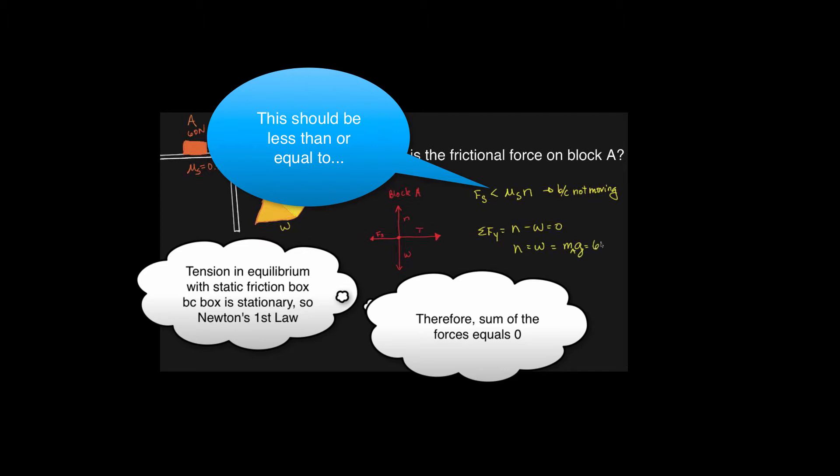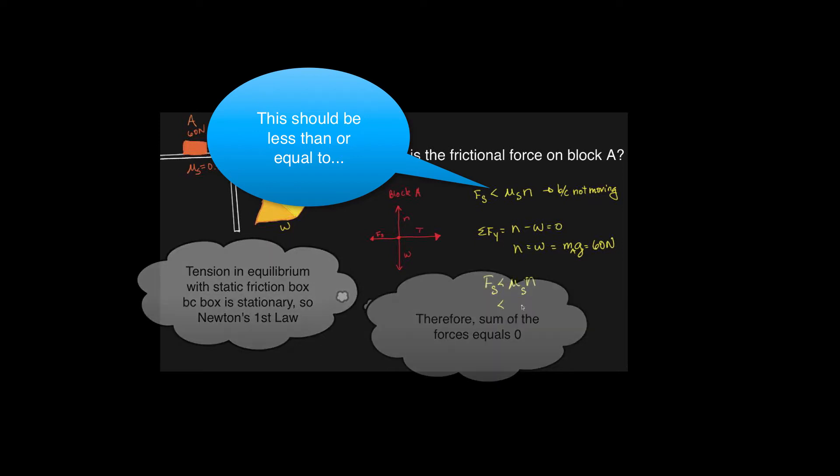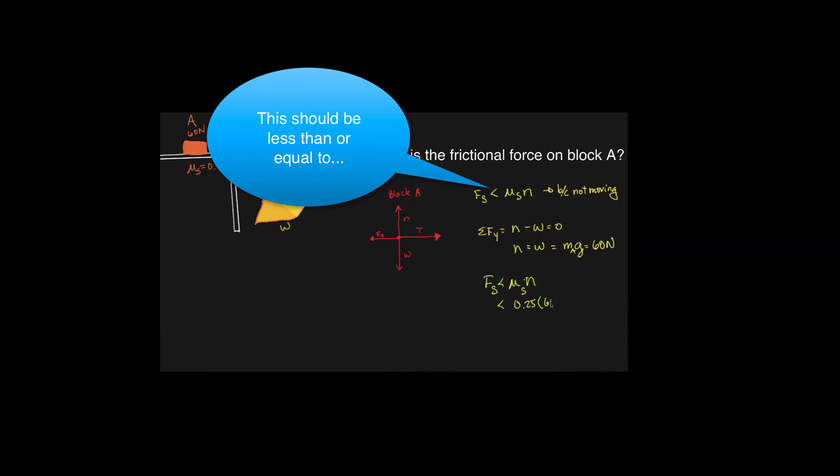So that would be 60 newtons that was given, right? So then F sub s is less than mu sub s times N, so less than 0.25 times 60 newtons. Are you okay with that, times gravity? No, because we have 60 newtons is already incorporated gravity. Oh okay, it didn't say 60 grams or kilograms and you would have multiplied by gravity. You understand? Yeah.